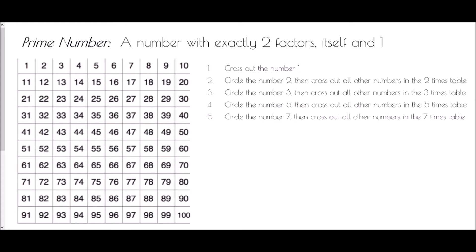First of all, cross out the number one. Circle the number two, then cross out all other numbers in the two times table. So we put a circle around the number two and cross out everything else which is in the two times table.